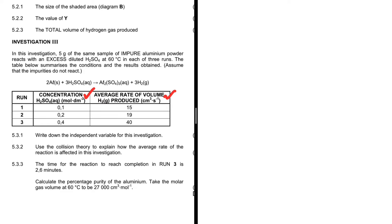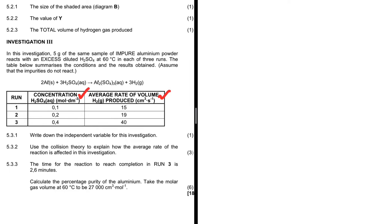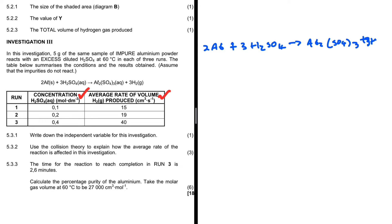Let me show you how. Let's copy down the equation first — just for clarity, there's no mark allocated to copying the equation, but it really helps to have it right in front of you: 2Al + 3H₂SO₄ → Al₂(SO₄)₃ + 3H₂.